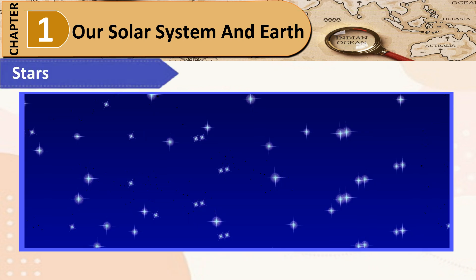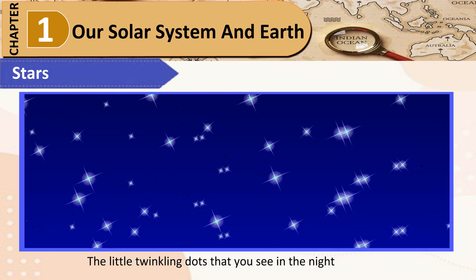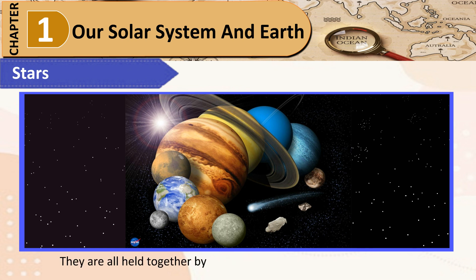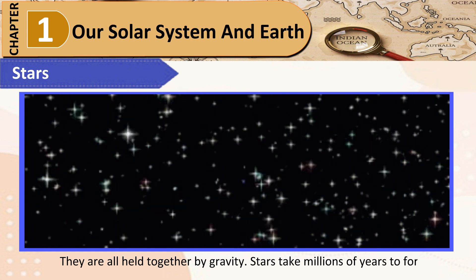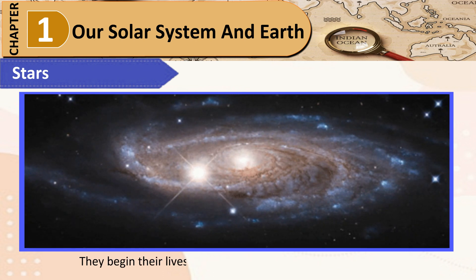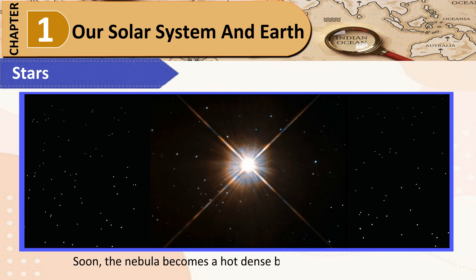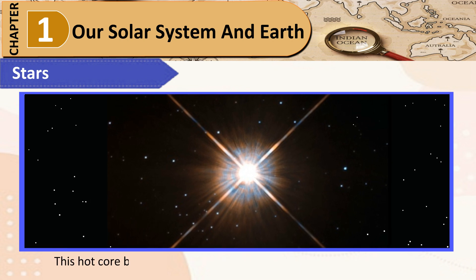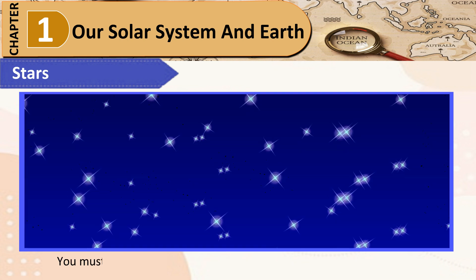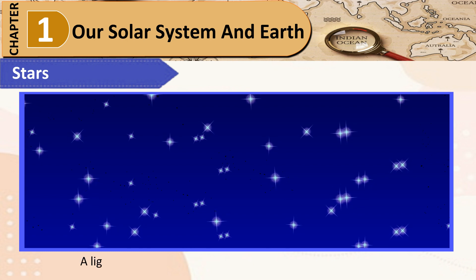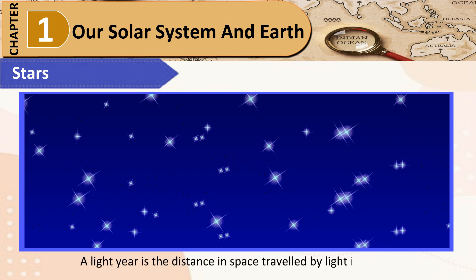Stars: The little twinkling dots that you see in the night sky are stars. These are giant balls of gas in space and have their own light. They are all held together by gravity. Stars take millions of years to form. They begin their lives in a nebula, which is a cloud of gas and dust. Soon, the nebula becomes a hot dense ball and the center heats up. This hot core becomes a star, giving out great amounts of heat and energy. Stars are of different sizes and brightness. A light year is the distance in space traveled by light in one year.